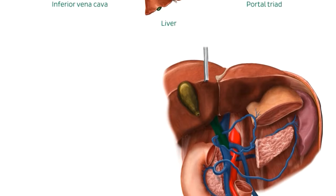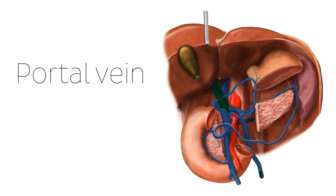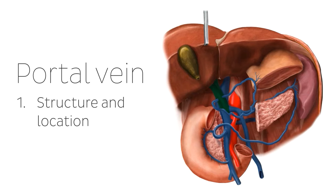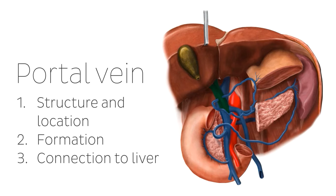As we discuss the portal vein, we'll talk about the structures associated with the portal vein as we come to it in order of this particular flow. So firstly, the portal vein structure and location, including some associated structures, the formation of the portal vein, and the portal vein as it connects to the liver. But first, let's begin with the portal vein's structure and location.